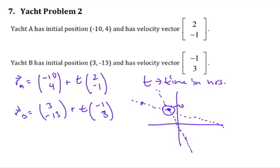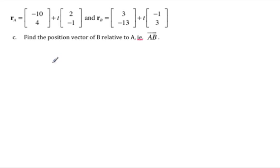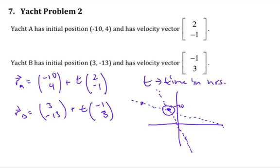That's our vector equation. Now let's go to the next part of the question. It says: find the position vector of B relative to A. So on my graph, this is A and this is B, and I want to find vector AB — from A to B. We know from doing that, we just have to start with B and subtract A.